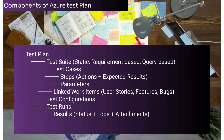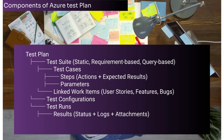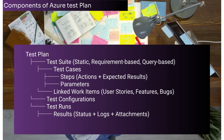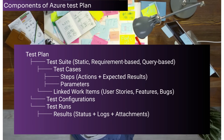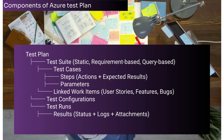Test Suites are logical groupings of test cases within a test plan. There are several types: Static Suite — manually added test cases; Requirement-based Suite — dynamically linked to work items such as user stories or features; and Query-based Suite — populated using a query, for example all test cases matching specific tags. Attributes of a test suite include name, description, and parent test plan or test suite.